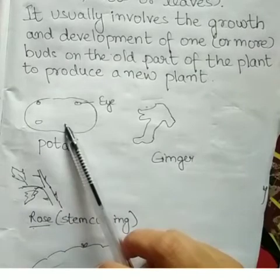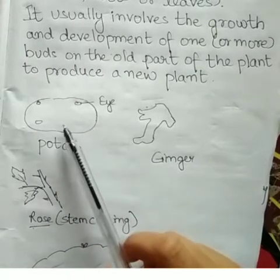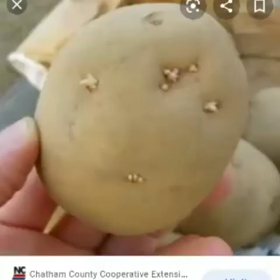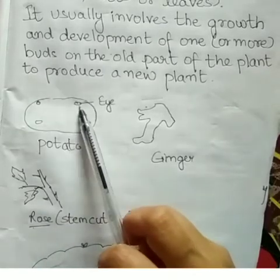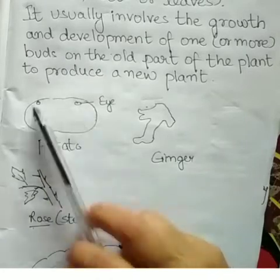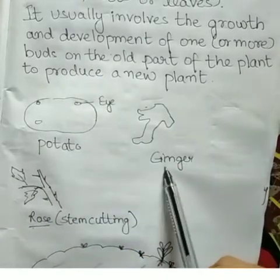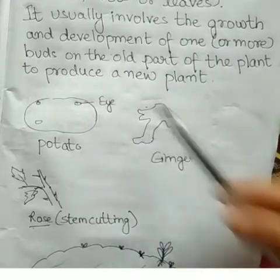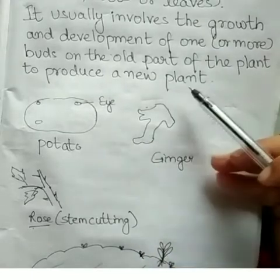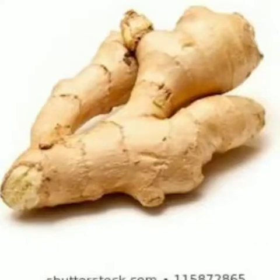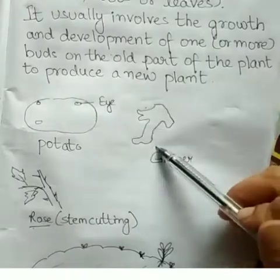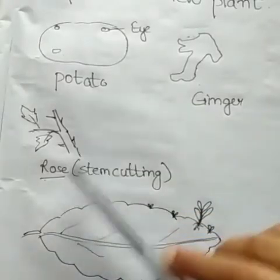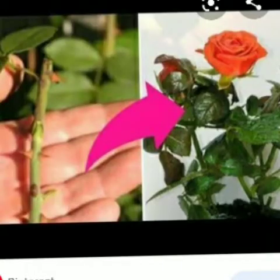For example, potato is an underground stem — the 'eyes' of potato are actually buds from which new plants grow. Ginger, when a part is grown in the ground, produces a new ginger plant. Rose can grow from stem cuttings.